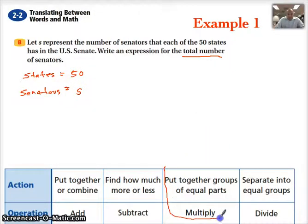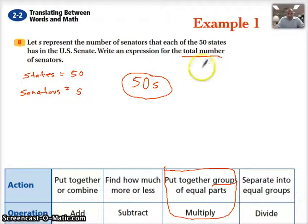We are looking at groups, put together groups of equal parts. The groups being the states and the equal parts being the senators. So what we are going to say is 50, the number of states, times the number of senators will give us that total number. We don't know how many senators there are. Actually, there are just two senators per state. But if we didn't know how many there were, we could just make this expression and end up representing how many total senators there would be in the U.S. Senate.